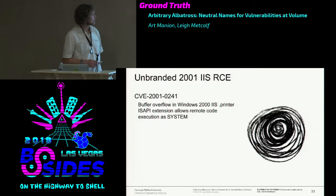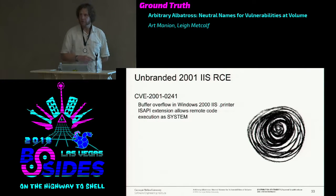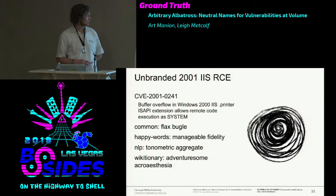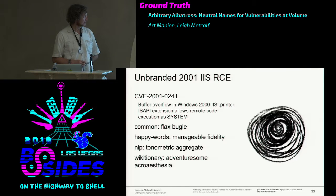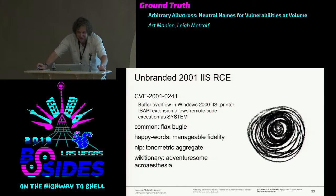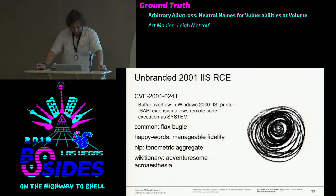Just as a counter-example, here's something with no branding—that black dot means there's no branding. This was a good one, a doozy back in the day, because it was a remote own of IIS—might still be if anyone's running Windows 2000. This comes out as 'flax bugle,' 'manageable fidelity,' 'tonometric aggregate,' and for the Wiktionary: 'acroesthesia'—do you know what that means? It's going to get you a sticker if you can answer correctly.